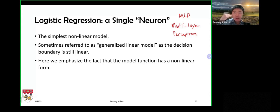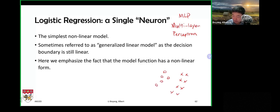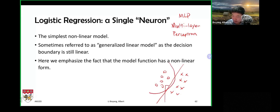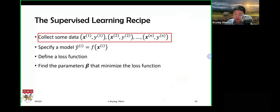Logistic regression is the simplest non-linear model, but it is sometimes still referred to as a generalized linear model because it still gives you a linear decision boundary — something that separates two different classes. For example, with circles and crosses representing two classes, a linear decision boundary is a straight line. Alternatively, a non-linear boundary could be curved or zigzag. In logistic regression, the decision boundary is always a straight line.